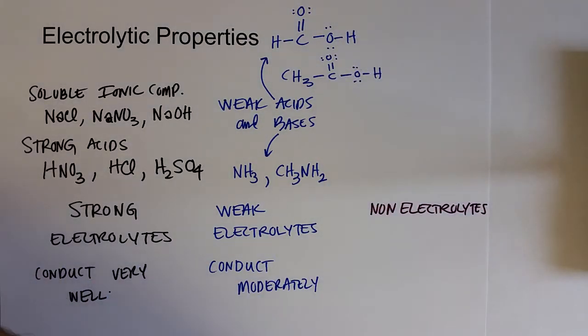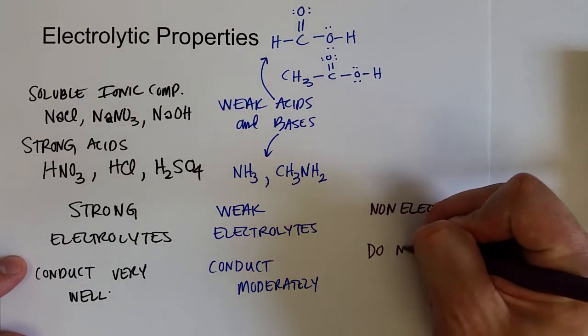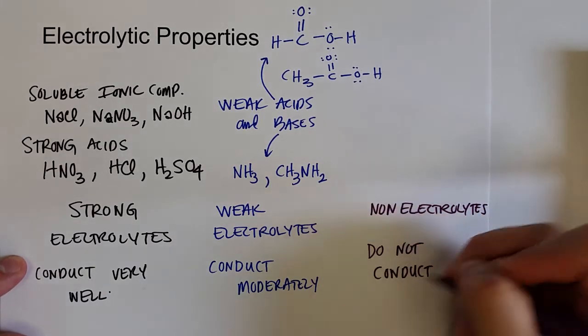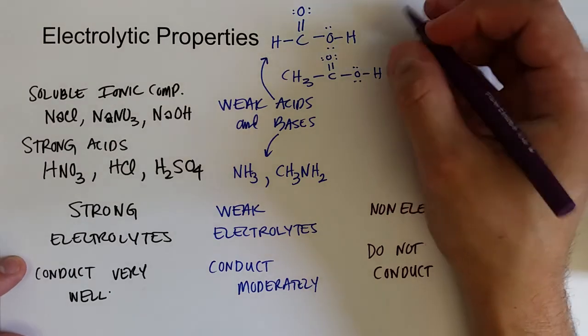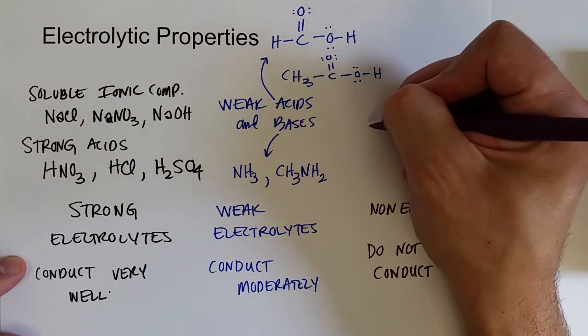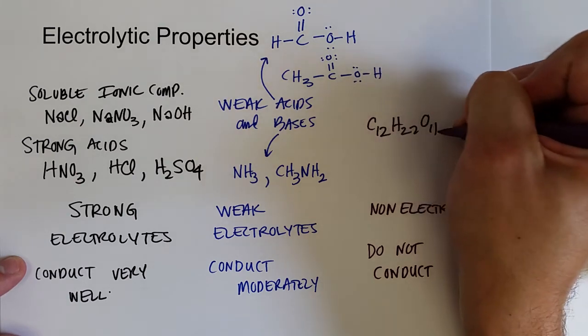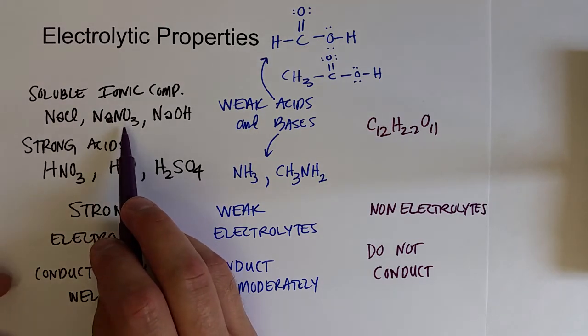And of course we have substances that do not conduct electricity when they are placed in water. And these would be neutral molecules, like sugar or glucose. Here's sucrose, C12H22O11. It's a molecule, so it is not an ionic compound that it dissociates.